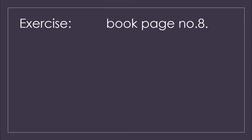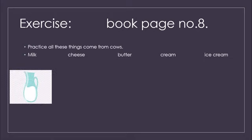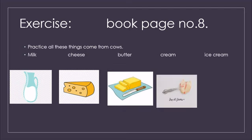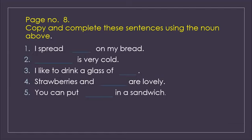Now open your book, page number 8. There is the unit of noun. The practice shows that all these things come from cows. The things given are milk, cheese, butter, cream and ice cream. These all things are made up of milk, that's why they have written that these things come from cows. Clear. Now we have to use these nouns to fill the blanks. Page number 8: copy and complete these sentences using the nouns above.